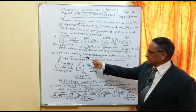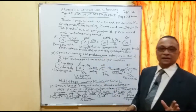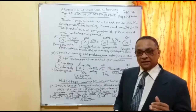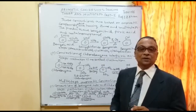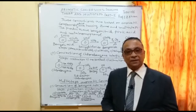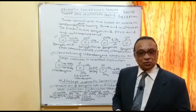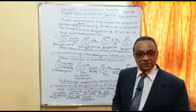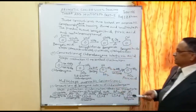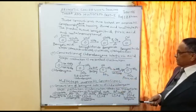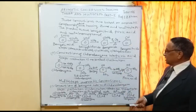In the first step, we do nitration using nitrating mixture — that is concentrated sulfuric acid and concentrated nitric acid — which provides the nitronium ion (NO₂⁺). This is your electrophilic aromatic substitution reaction. In the second step, it is treated with potassium hydroxide, and it will be changed into a dinitro derivative.